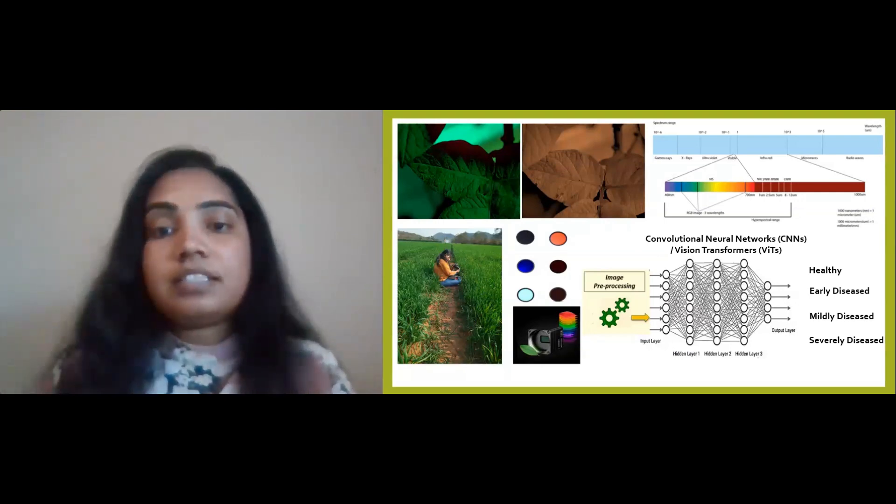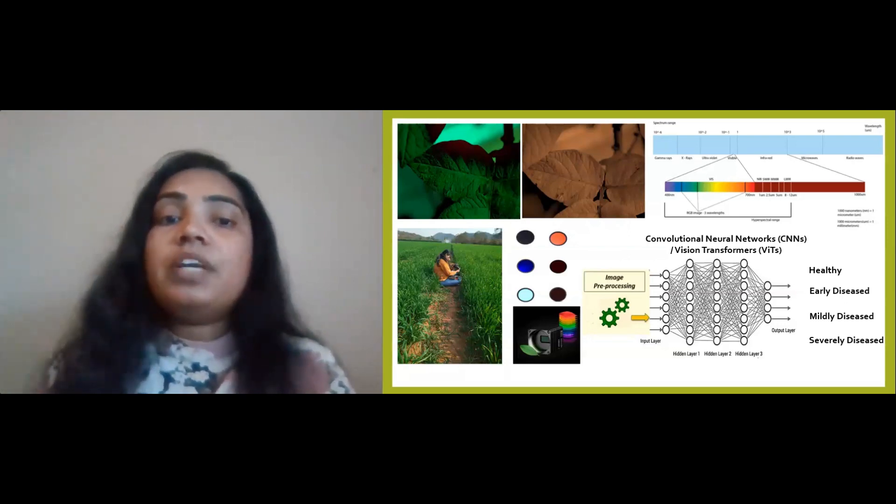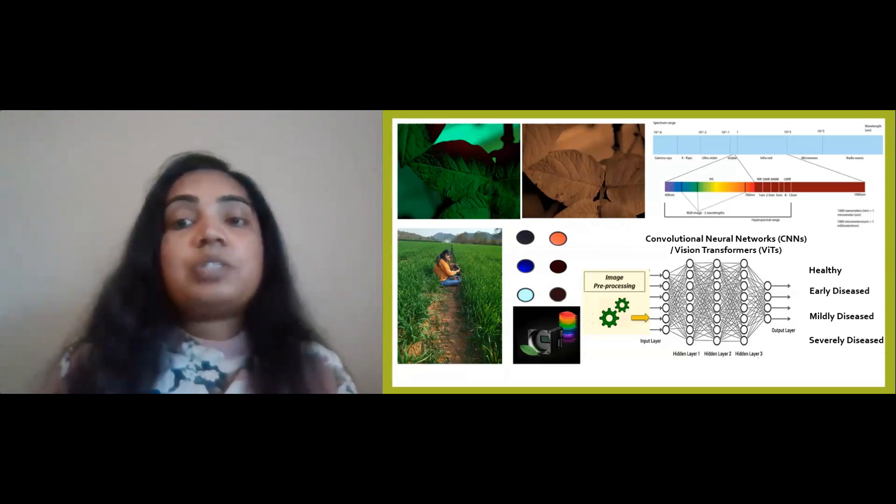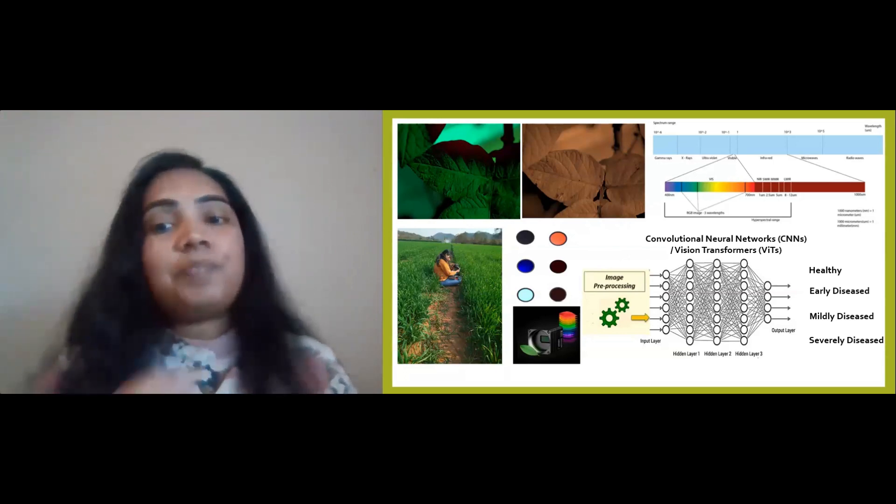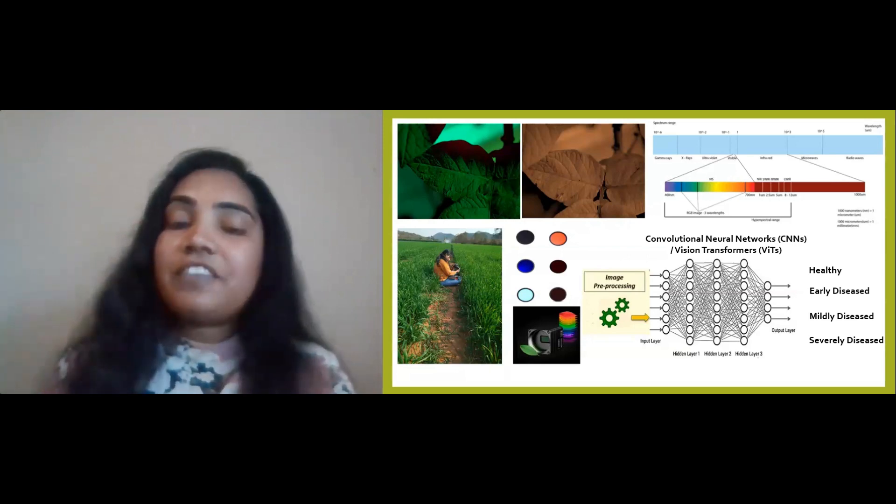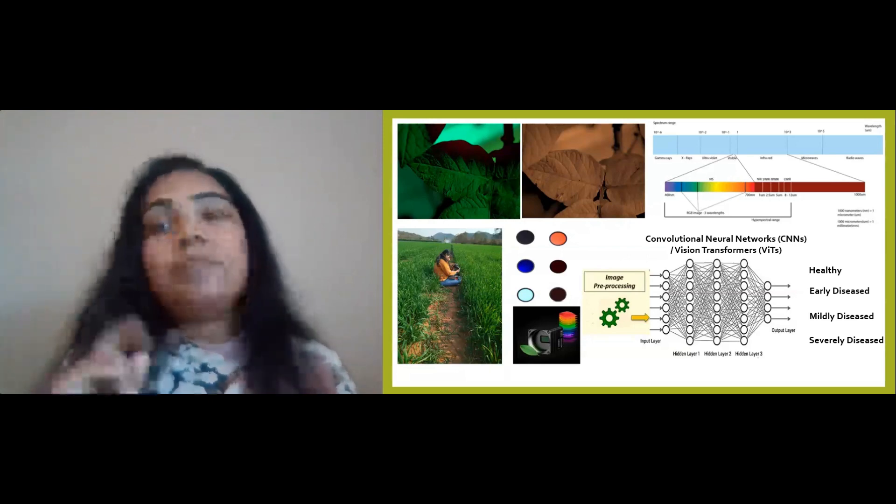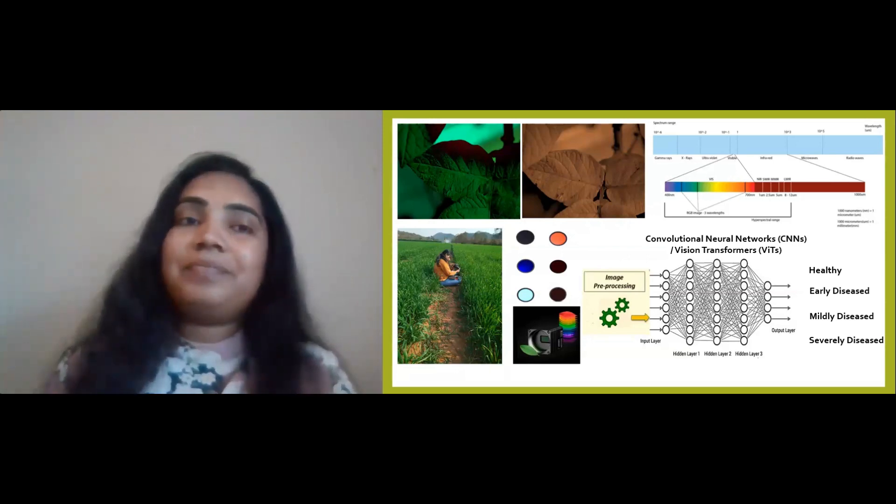With this early disease classification, we can nip diseases in the bud, saving crops and increasing yields. So remember, the next time you bite into a juicy tomato or a crispy apple, there are superheroes behind it, safeguarding our food one pixel at a time.